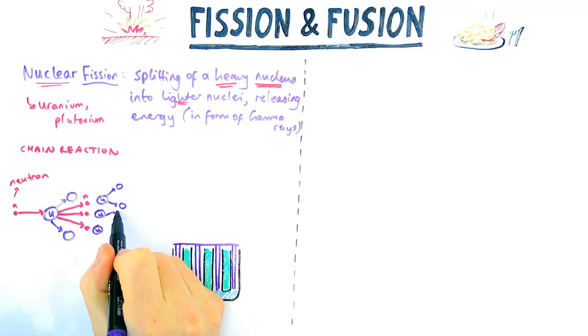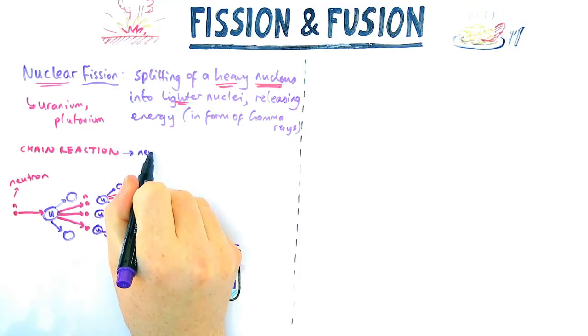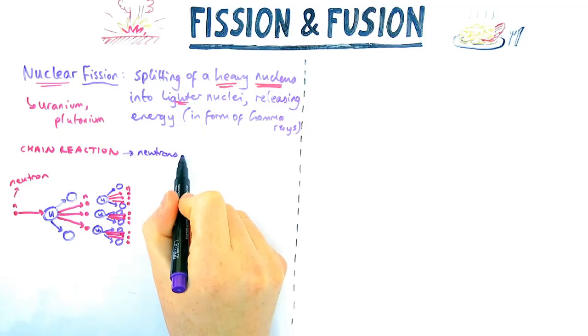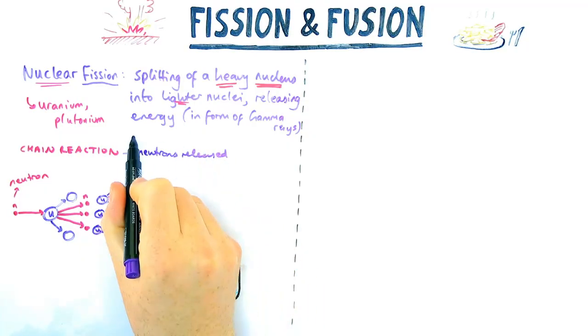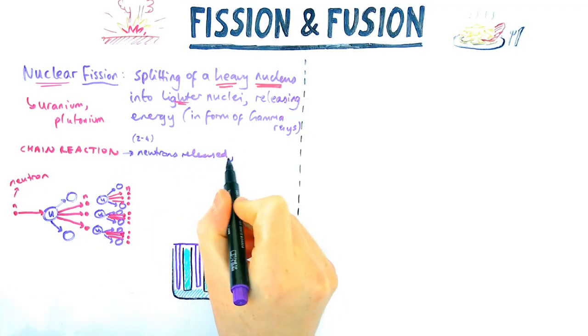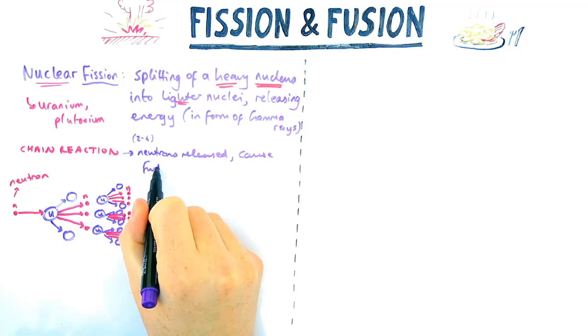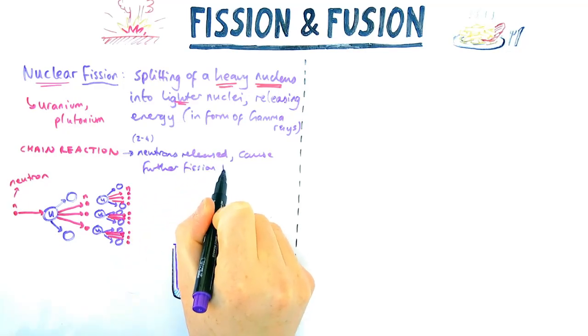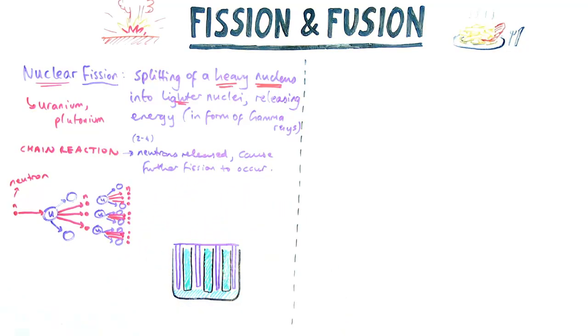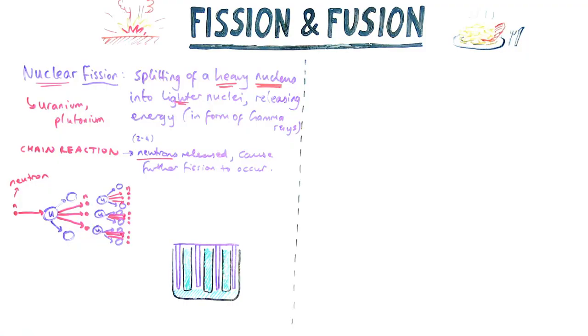Those neutrons will then collide with and be absorbed by three other uranium nuclei. Those will also split and they'll also release neutrons. So by the time of the second kind of interaction, you've gone from one to three to nine different neutrons in this example. So hopefully you can see if you were to do this like five, ten, twenty times, you would have hundreds and thousands of neutrons produced. So in a chain reaction, neutrons are released, which causes more fission or can cause further fission to occur.